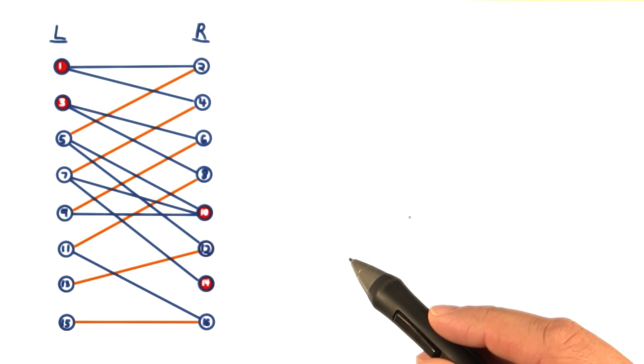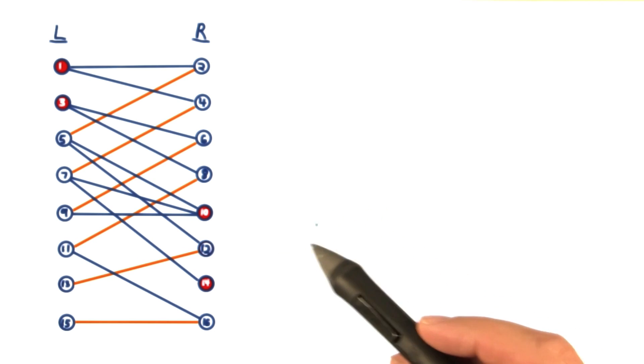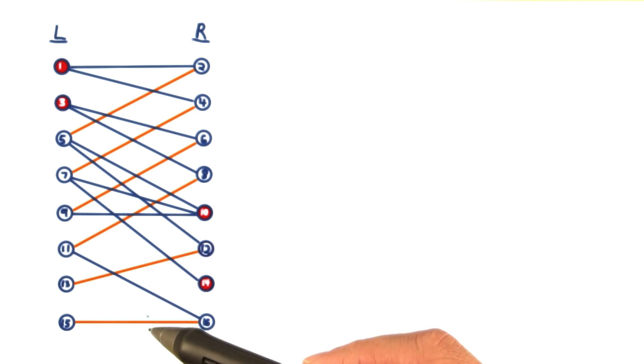Let's pause for a moment here and see how this works in an example. The first iteration is trivial, so let's start with a later iteration, where we have some existing matching marked by the orange edges here that we're trying to augment.